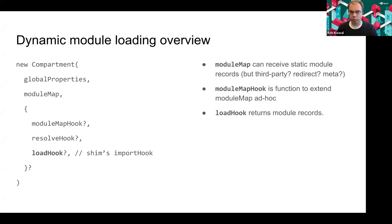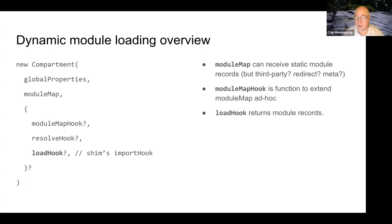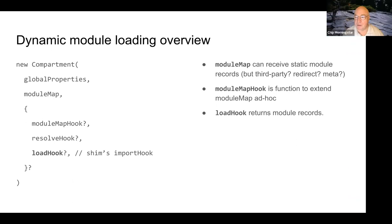Module map and module map hook are for synchronous lookups of static module records, whereas the load hook can be asynchronous. All of these are memoized in two tables within the compartment: one for static module records and the other for module instances. The module map and module map hook ultimately take a full module specifier and provide the corresponding static module record.